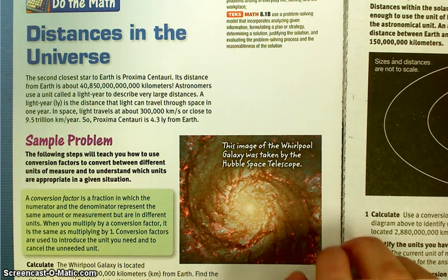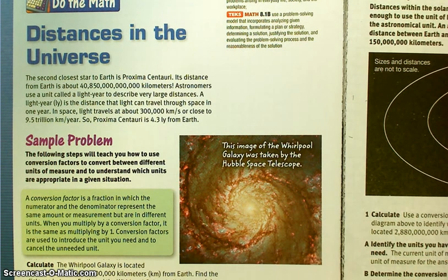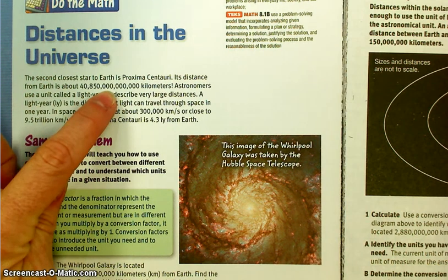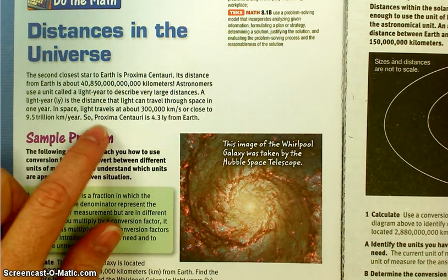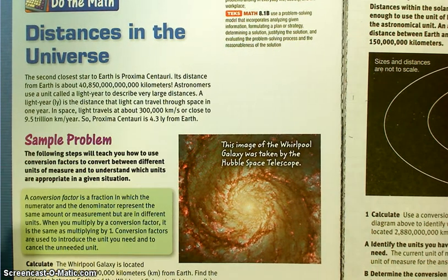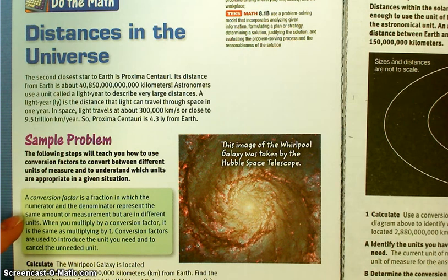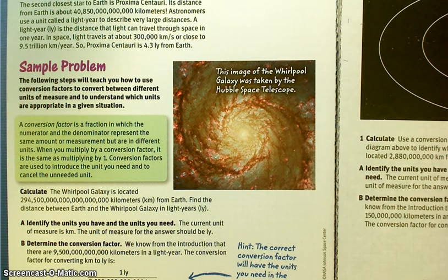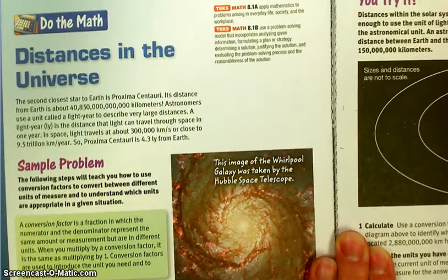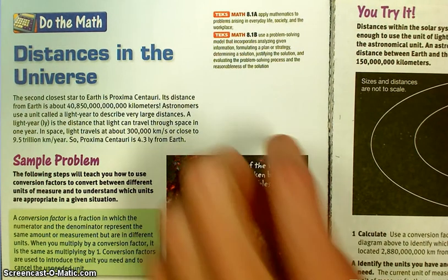Before I walk you through any problems, we need to discuss what a conversion factor is. If I wanted to go from this many kilometers to light years, I have to convert from kilometers to light years. A conversion factor is a fraction in which the numerator and denominator represent the same amount or measurement, but are in different units. When you multiply by a conversion factor, it's the same as if you were multiplying by one. Conversion factors are used to introduce the unit you need and cancel out the unit that you don't need. Before I get into this example down here which is using big numbers, I'll do a simpler one up here to kind of show you what I'm talking about.